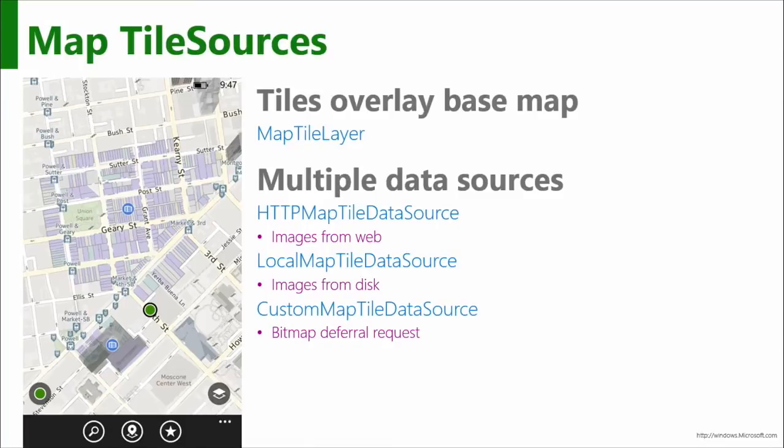You're actually supplying with your app the actual tile images, and they are shipped with your app, so you're reading them out of local storage. And then the third option is you can have a custom map.